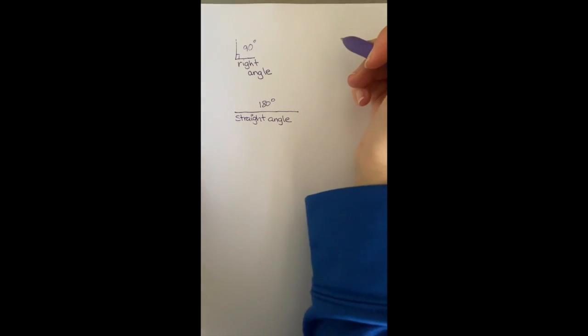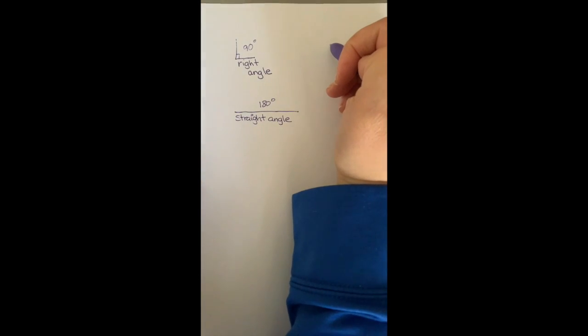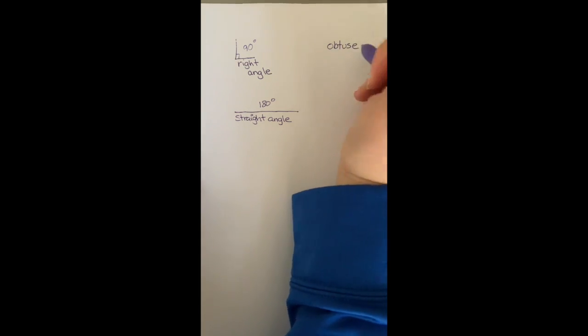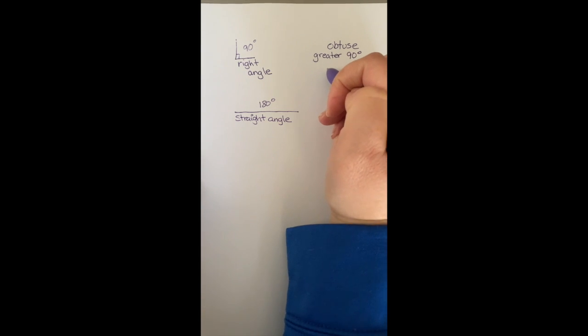And then the two other ones that might be a little bit different are the obtuse, and this is any angle greater than 90 degrees. So this would be your angle that would look like this. And they represent that to show that this is the angle we're talking about.